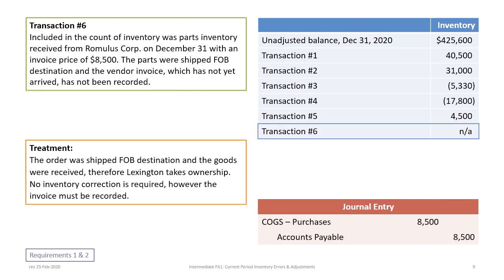Transaction six: included in the inventory count were parts received from a supplier on December 31st at an invoice price of $8,500. The parts were shipped FOB destination and the vendor invoice, which has not yet arrived, hasn't been recorded. Since FOB destination means Lexington takes ownership upon receipt, and the goods were received on December 31st, the inventory is properly included. However, the invoice must be recorded — we adjust purchases and accounts payable by $8,500.